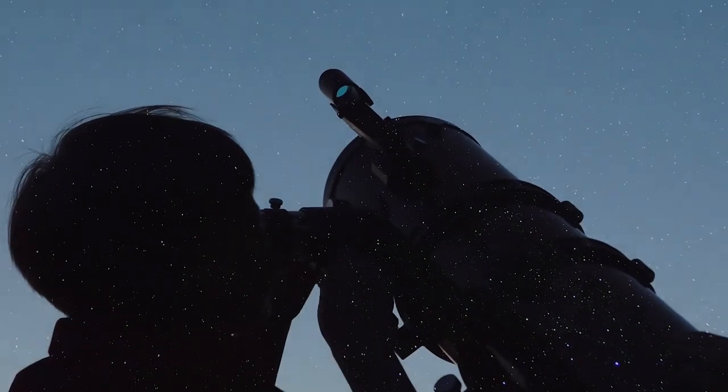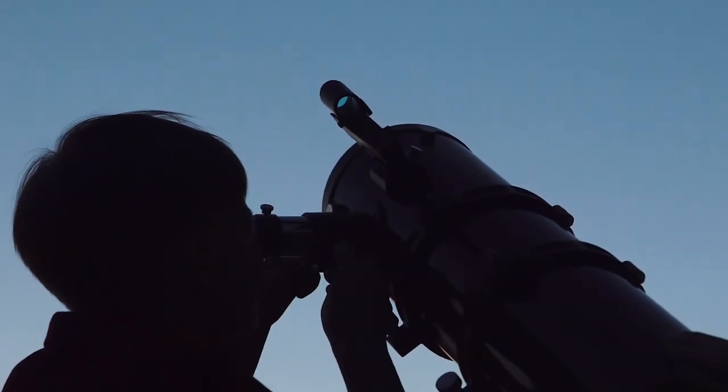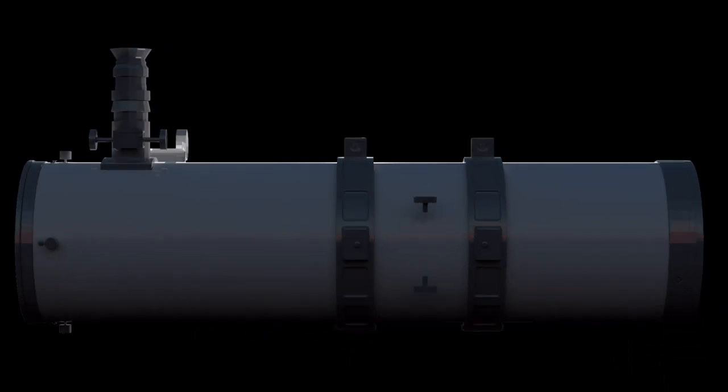Telescopes allow us to perceive very faint light that has traveled to us from great distances, light that is so much fainter than our unaided eyes could ever see. And although telescopes come in many designs, they all have some basic features in common.